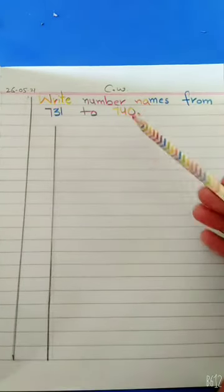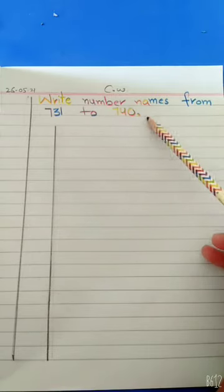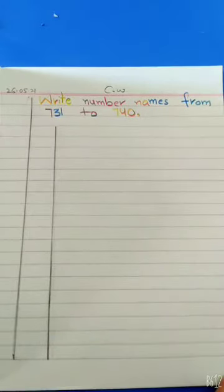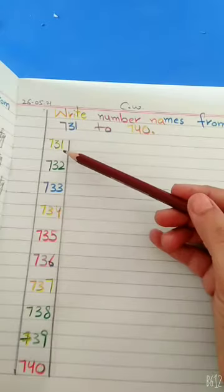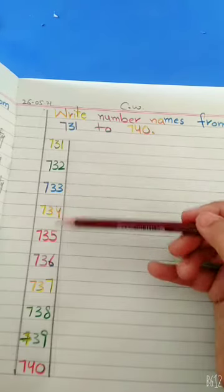Here write 'Number names from 731 to 740'. Now we have to put numbers from 731 to 740: 731, 732, 733, 734, 735.